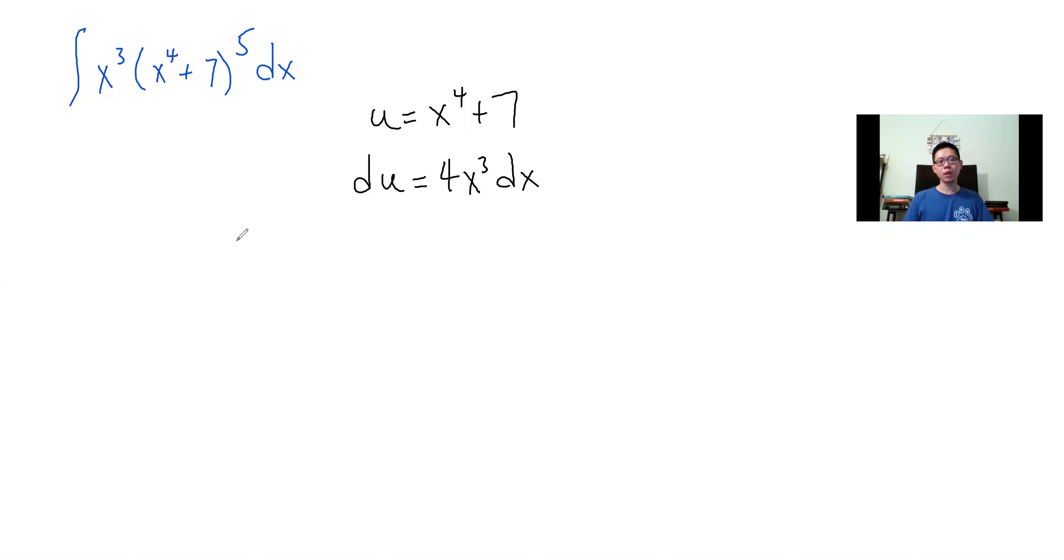Compare this du with what we have in the integrand. We have the x cubed, but we don't have the 4. This type of situation is perfectly fine. If you are missing the 4, just divide it over, so that du over 4 equals x cubed dx.